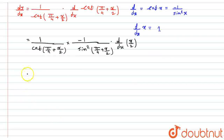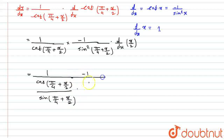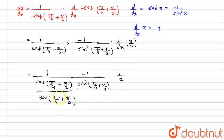Now for solving: cot can be written as cos upon sin, so it will become cos(π/4 + x/2) divided by sin(π/4 + x/2). Then this minus 1 upon sin²(π/4 + x/2), with the derivative of x/2 giving us 1/2. One sin and one sin will cancel out.